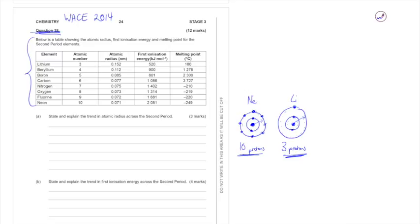So it says right here, state and explain the trend in atomic radius across the second period. Fantastic. Now conveniently, this table is full of the second period elements, but of course, if this wasn't given to us, we could always refer to our periodic table which is provided. Now there's actually two parts to this question, state and explain. It's very easy to skip over that first word, but you need to make sure you state the trend.